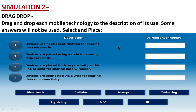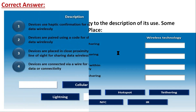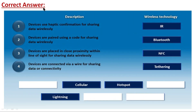Here are the correct answers. Option 1 — devices use haptic confirmation for sharing data wirelessly — the answer is IR. Option 2 — devices are paired using a code for sharing data wirelessly — the answer is Bluetooth. Option 3 — devices placed in close proximity within line of sight — the answer is NFC. Option 4 — devices connected via wire for sharing data or connectivity — the answer is tethering. Cellular hotspot and Lightning are not used in this simulation.